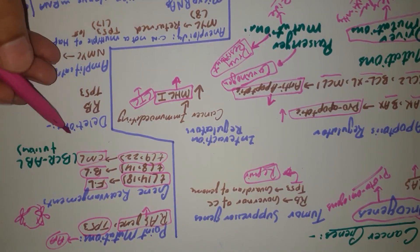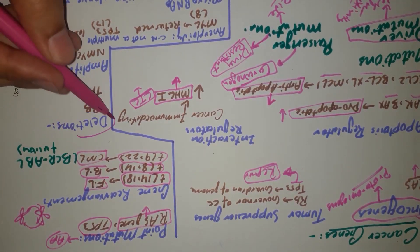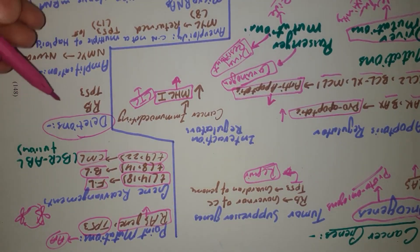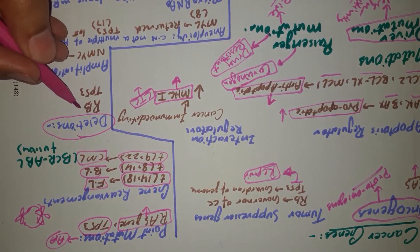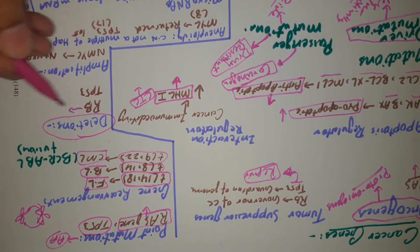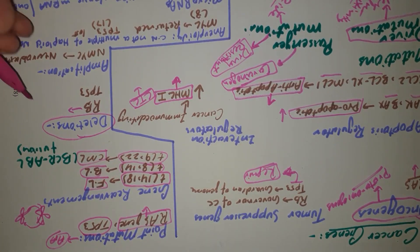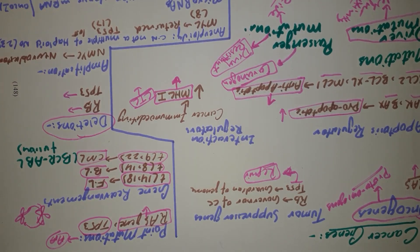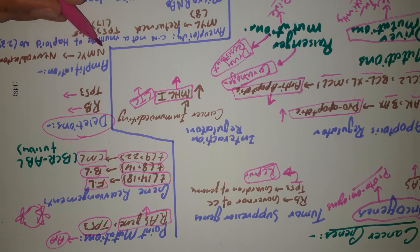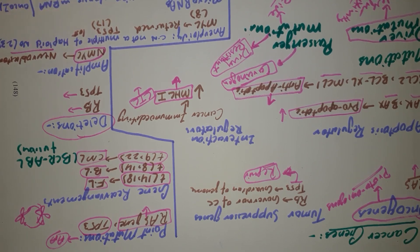Moreover, deletions can also lead to carcinogenesis. For example, deletion in the retinoblastoma gene can lead to its inactivation, and TP53 inactivation can also occur by deletion of some amino acid or part of the gene. Additionally, amplification can lead to carcinogenesis — for example, NMYC gene amplification leads to neuroblastoma development.